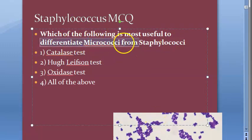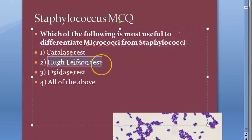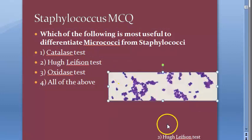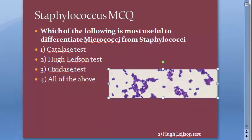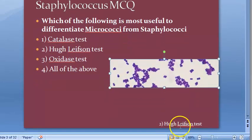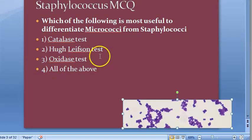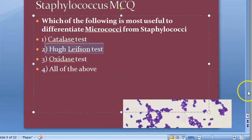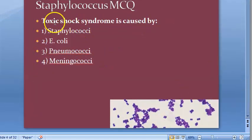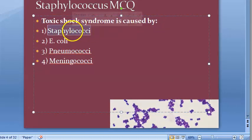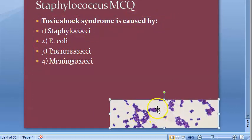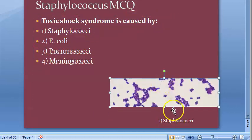Next question: which of the following is most useful to differentiate Micrococcus from Staphylococci? The answer is the HL test. Look at the answer here — HL test is the answer. Going on: toxic shock syndrome is caused by staphylococci.